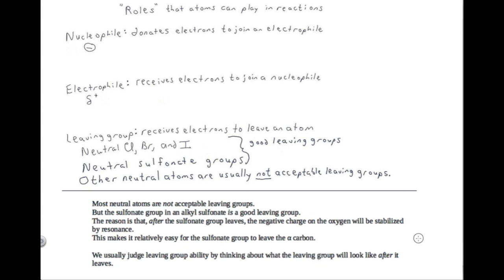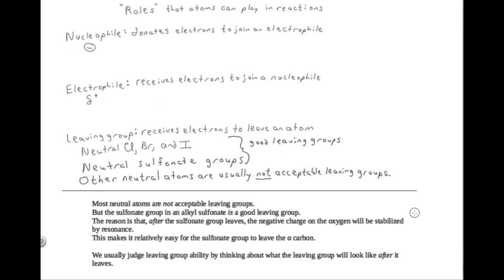Another very useful pattern we used here is to watch out for resonance — when resonance exists, it's usually the most important factor. The sulfonate's negative charge after leaving is stabilized by resonance, and that's the most important factor in evaluating it as a leaving group. So the pattern is: watch out for resonance and try to use resonance to explain phenomena in organic chemistry. If you see an organic chemistry question asking you to explain something, look for an opportunity to use resonance as part of your explanation when possible.